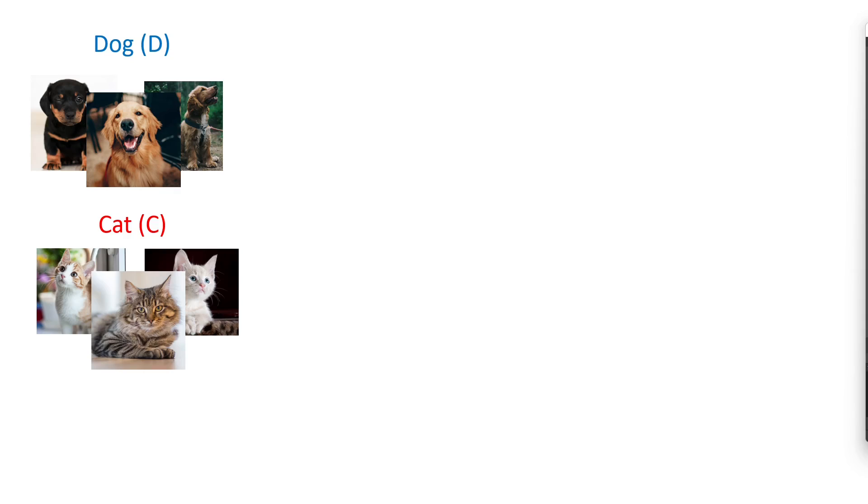Let's look now at a class of problems where the naive Bayes is quite bad, namely image classification. Here we try to classify dogs and cats. So our P of Y, the prior probability, has two classes. P of D, the prior probability of that image to be a dog, and P of C, the probability of that image to be a cat.